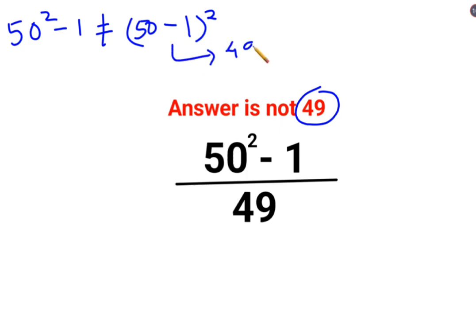But since this is not equal to 50 minus 1 the whole square, so what is this equal to? This is actually equal to 50 square minus 1 square, which looks like a square minus b square.